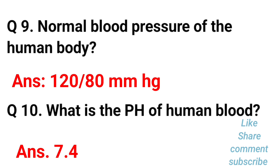What is the pH of human blood? The pH of human blood is 7.4. Normal body pH is 7.4.